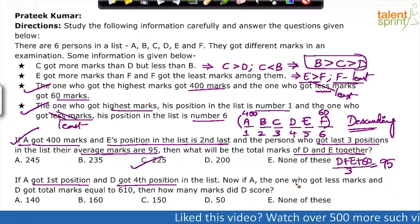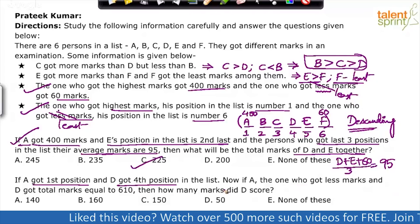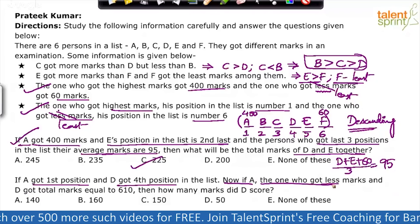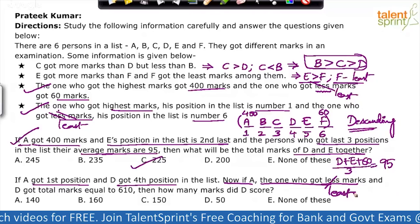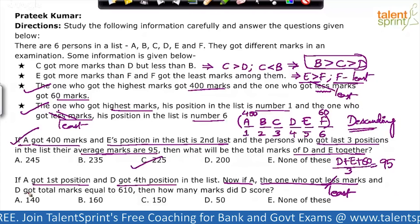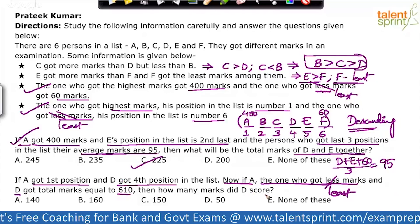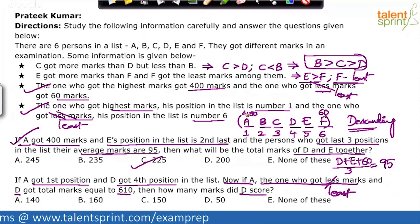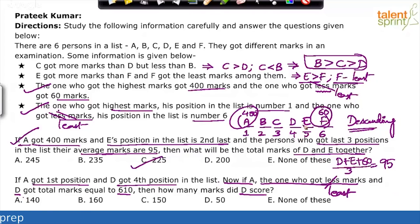Now for the second part of Question 2: if A, the one who got the least marks, and D together got total marks equal to 610 — meaning three persons: A, the person with the least marks (F), and D — their total is 610. A = 400, F = 60, so A + F + D = 610. That gives 400 + 60 + D = 610, so D = 610 − 460 = 150. Option C is the answer.